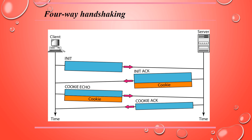The solution is to pack the information and send it back to the client — this is called generating a cookie. The cookie is sent with the second packet to the address received in the first packet. If the sender of the first packet is an attacker, the server never receives the third packet; the cookie is lost and no resources are allocated. If the sender is an honest client, it receives the second packet with the cookie and sends it back unchanged. The server receives the third packet, verifies the cookie, and can then allocate resources.